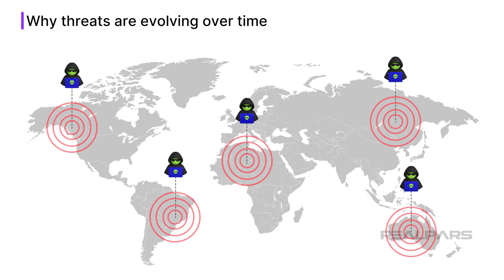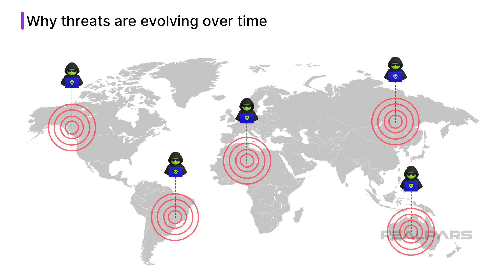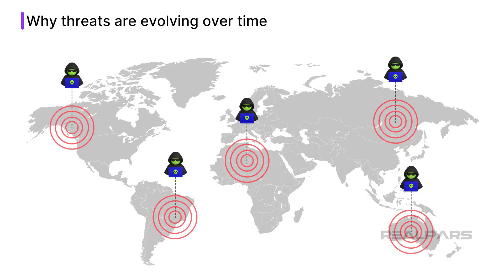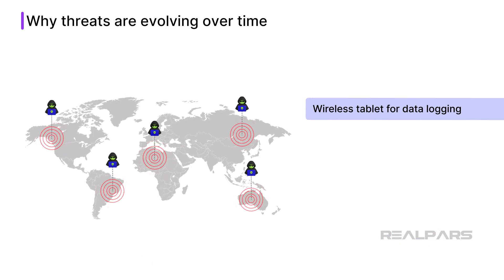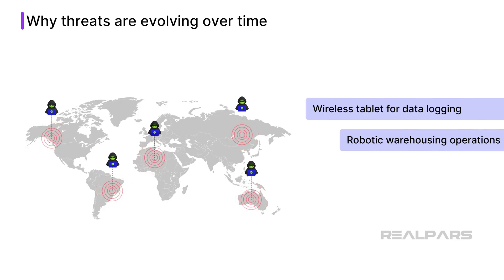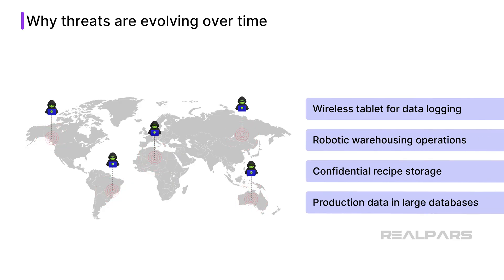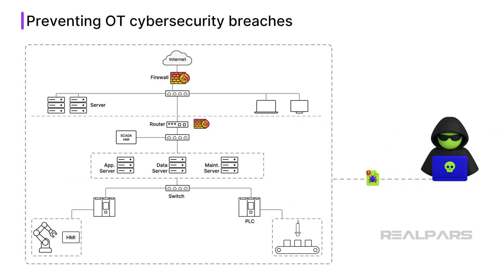These modern hackers take advantage of the increasing digital footprint of our OT operations, including wireless tablet use to log data, robotic warehousing operations, and storage of confidential recipe and production data in large databases. Even a simple breach of a database can lead to devastating consequences, including theft of intellectual property and financial data.